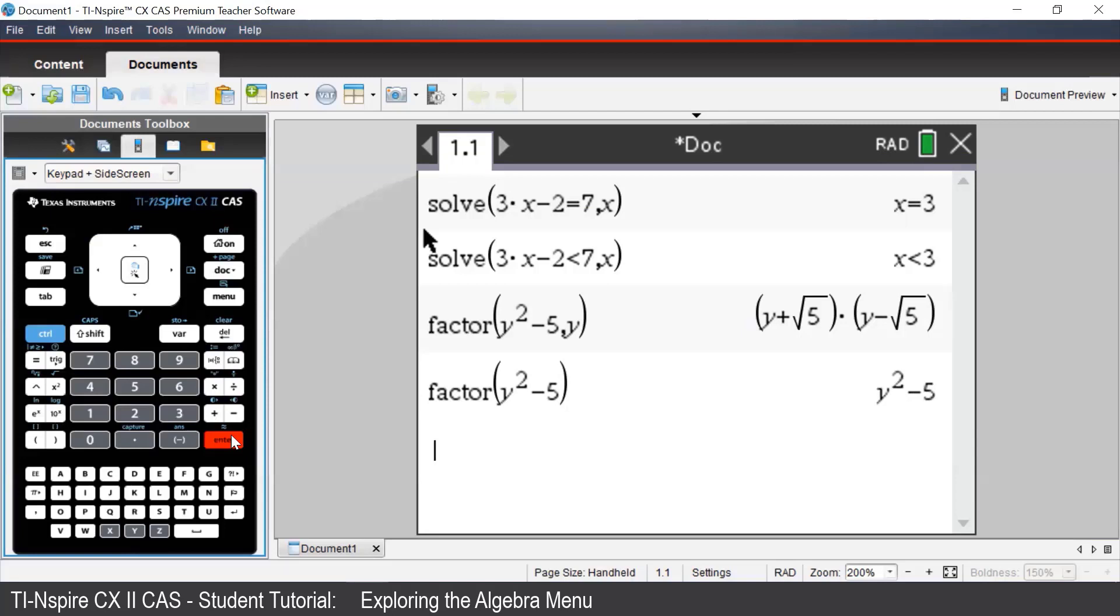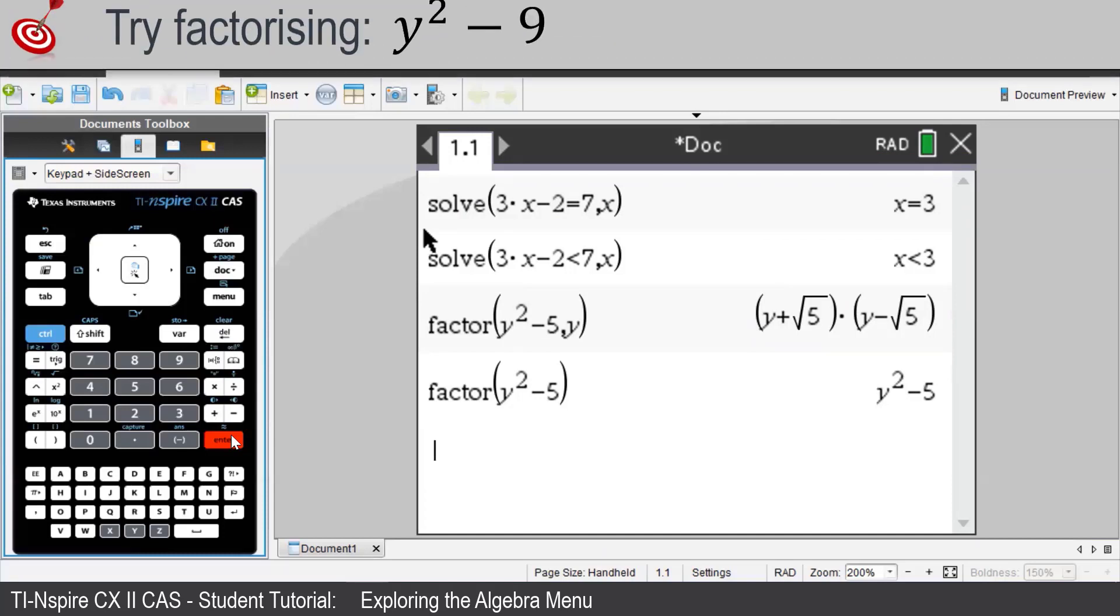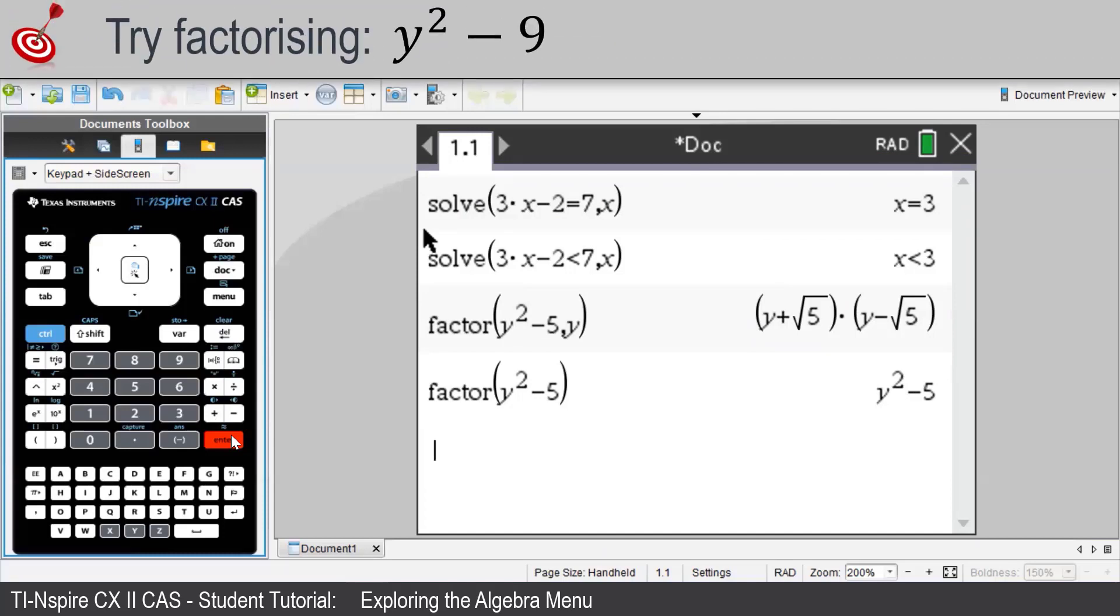If we don't include the comma and the pronumeral, the TI-Inspire will find rational factors. Whereas if we do include the comma and the pronumeral, the TI-Inspire will try to find real factors.